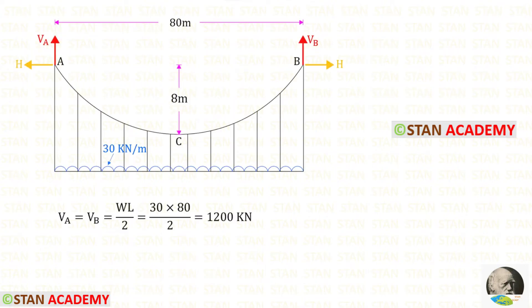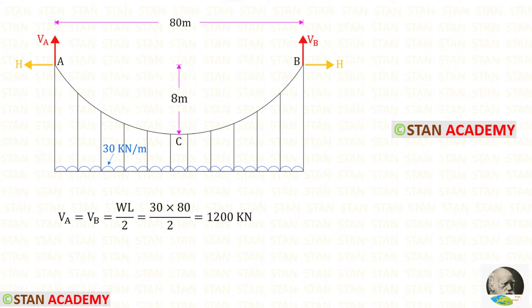Let us find the vertical reactions VA and VB. We know that in this cable we have symmetrical loading, so we can easily find the vertical reactions. To find them, we multiply the UDL by the distance 80 and divide by 2. Doing that, we get VA and VB equal to 1200 kilonewtons.